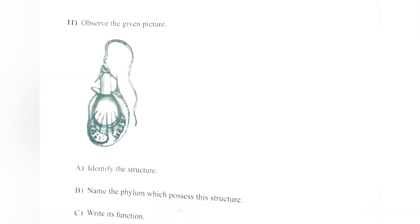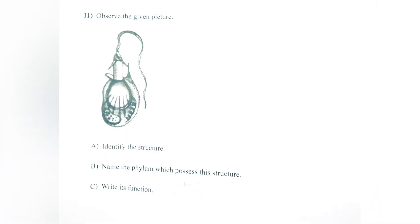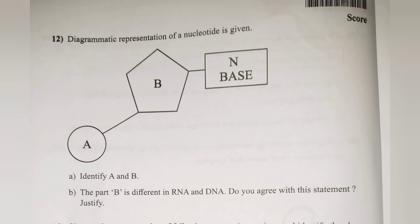Question 11: Observe the given picture. a. Identify the structure. b. Name the phylum which possesses this structure. c. Write its function. Answer: a. Nematoblast (Cnidoblast). b. Phylum Coelenterata. c. Nematoblasts are used for defense and for capture of prey.